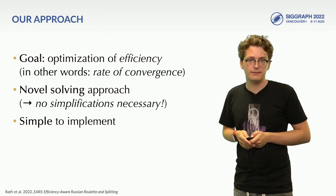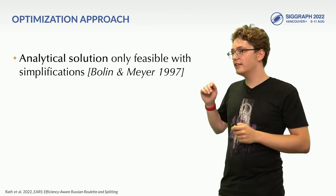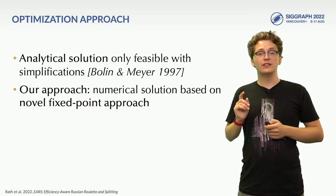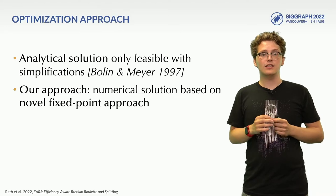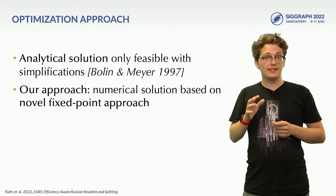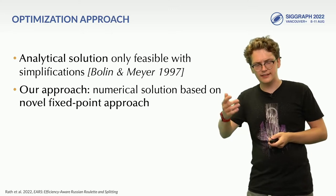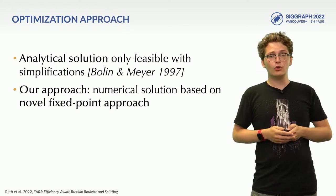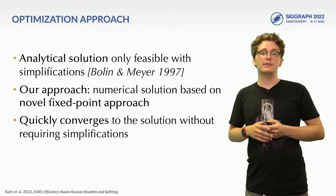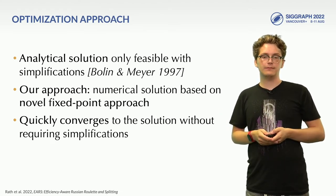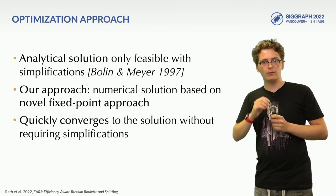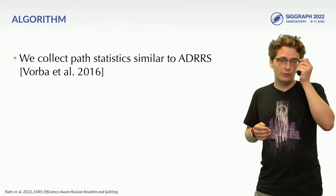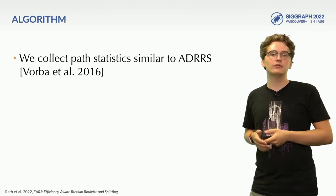We will start by discussing the theoretical motivation of our technique. We have already learned that an analytical solution to the splitting factors is not feasible. In our paper, however, we show that a numerical solution can be found instead. We achieve this by devising a novel fixed-point scheme. This works by starting with an initial guess for the splitting factors — for instance using albedo-based Russian Roulette — and then refining them iteratively throughout rendering. In our paper, we also prove that this converges to the solution of the optimization problem without any simplifications.